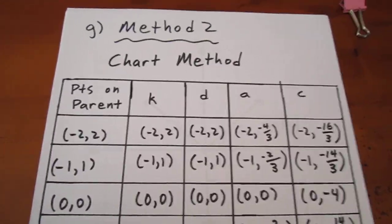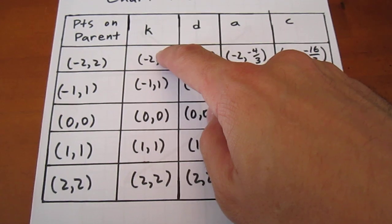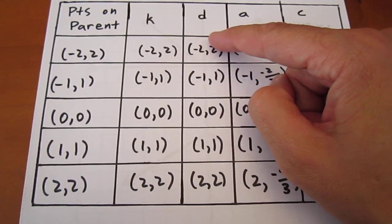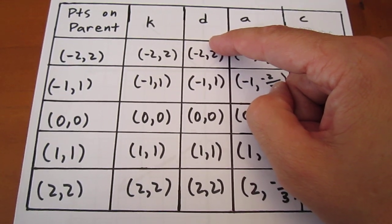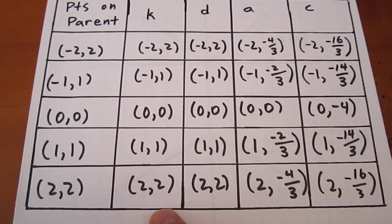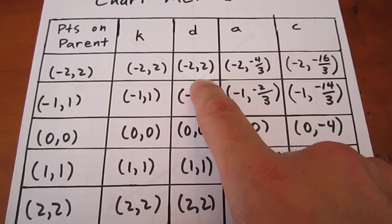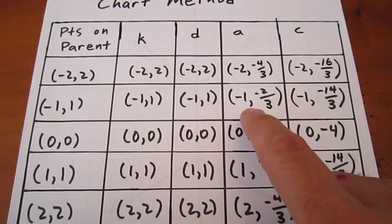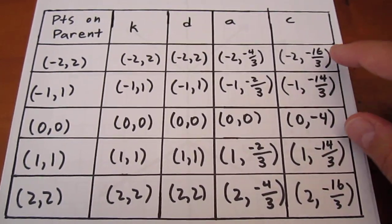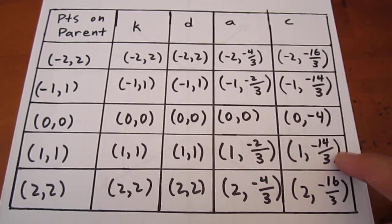Method 2 lets us cut to the chase a little bit quicker. We simply consider the points on the parent function and then consider the effects of k and d. We want to divide each x coordinate by k — k is 1, so the x coordinates are unchanged. We then add the d value to each x coordinate, but d is 0, so the x coordinates remain unchanged. We're done with horizontal transformations, of which there were none. Considering the vertical transformations: the point negative 2, 2, when we multiply each y coordinate by negative 2 thirds, becomes negative 2, negative 4 thirds. Every y coordinate is multiplied by negative 2 thirds, then we subtract 4 from every y coordinate to account for our translation down 4 units, giving us these coordinate points.